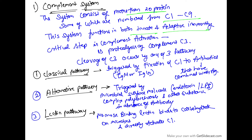The critical step in complement activation is the proteolysis of complement C3. Cleavage of C3 can occur by any of three pathways: the classical, alternative, or lectin pathway. The classical pathway is triggered by fixation of C1 to antibodies. The alternative pathway is triggered by microbial surface molecules like polysaccharides in the absence of antibody. The lectin pathway is activated when mannose-binding lectins bind to carbohydrates on microbes and activate C1.